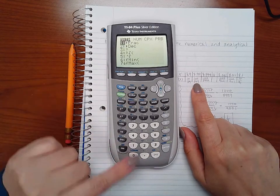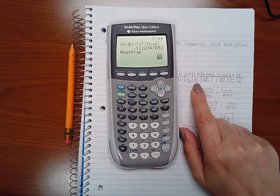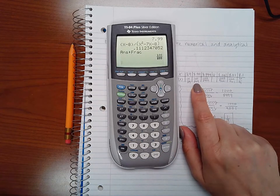Then I'm going to hit math and 1 for fraction and it'll convert that to a fraction, so 100 over 899.